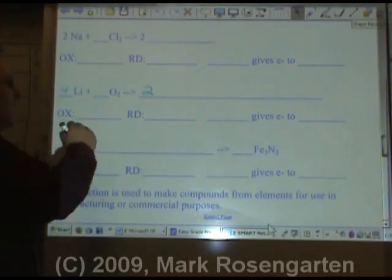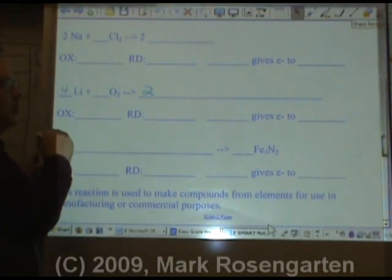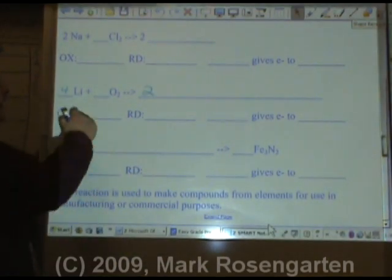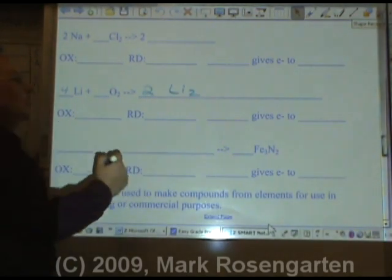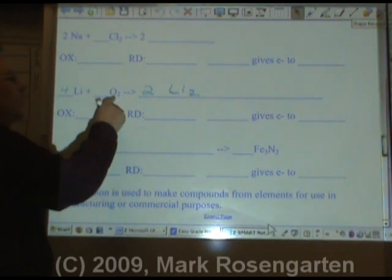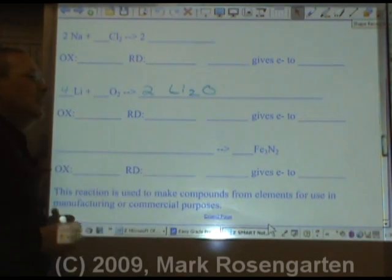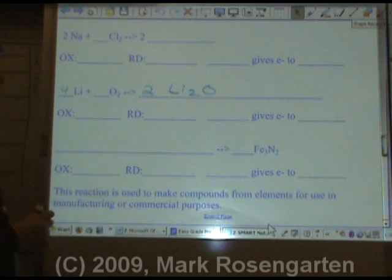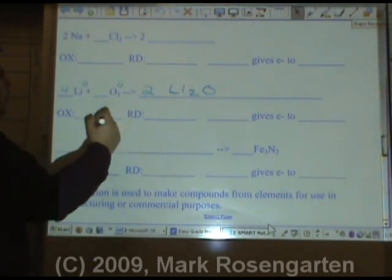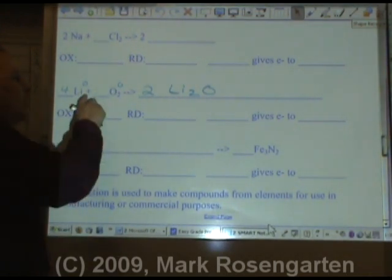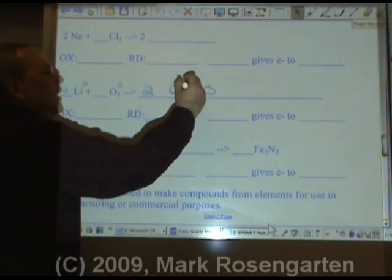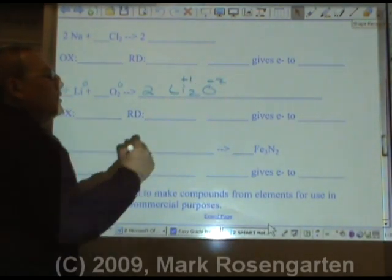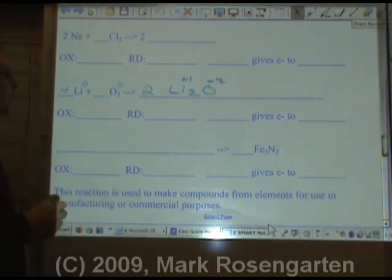In this next reaction, lithium reacts with oxygen to form lithium oxide. Four lithiums, two times what is four? Two. We have two oxygens. Two times what is two? One. Lithium oxide. Lithium and oxygen both have no charge, because they're not in a compound. If they were charged, then they'd be in a compound. Plus one, minus two, according to the periodic table.